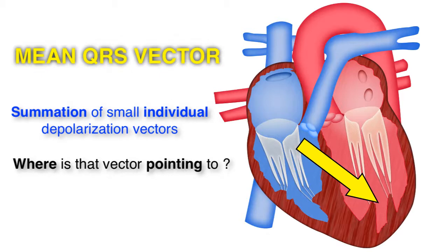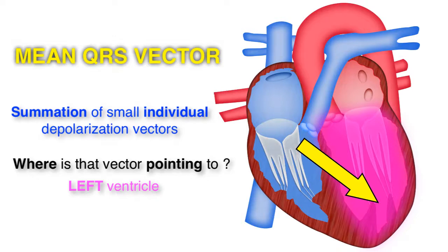In a normal person, it will be pointing towards the left ventricle, because the left ventricle has more muscle mass than the right ventricle and therefore more electrical vectors.